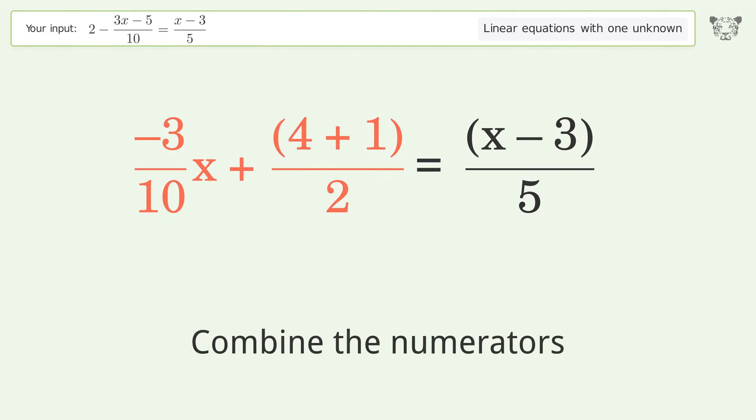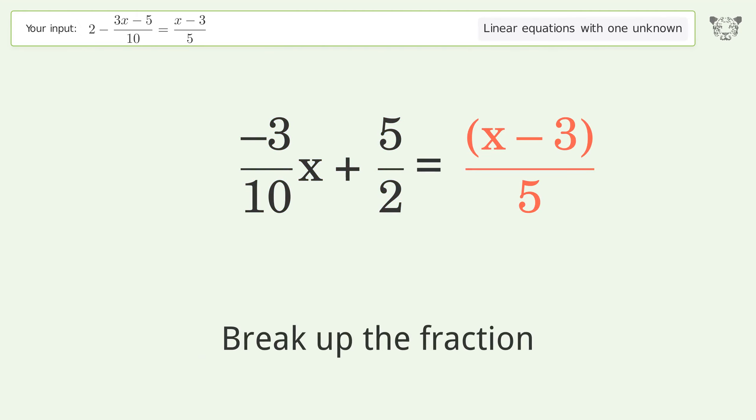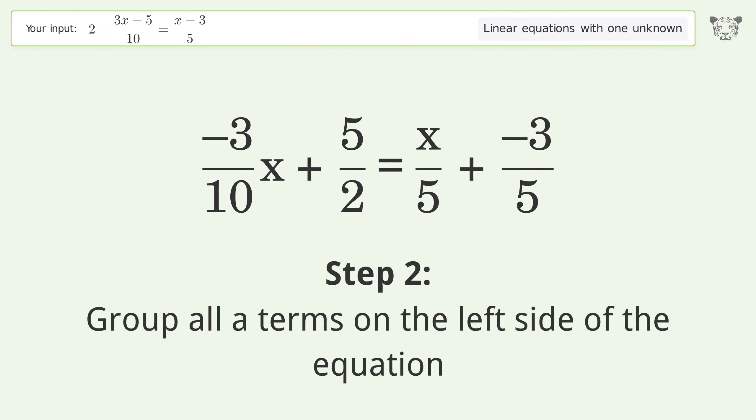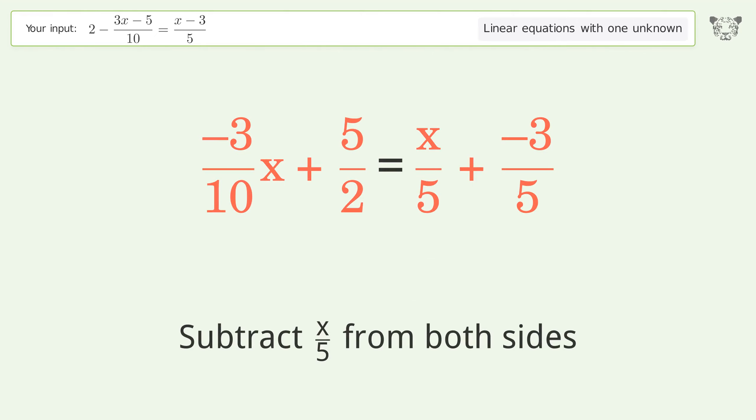Combine the numerators. Break up the fraction. Group all x terms on the left side of the equation. Subtract 10 over 5 from both sides.